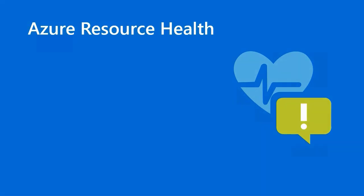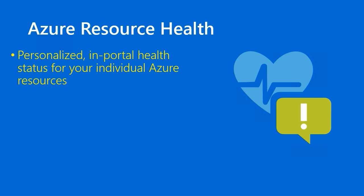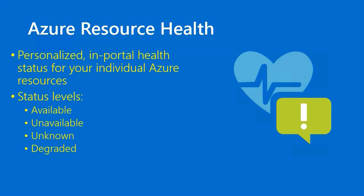Related to Azure Service Health is Azure Resource Health. Service Health is more of a global notification of Azure service status, while Resource Health is a microcosm of that — it's personalized in-portal health status for your individual Azure resources. The status levels reported are: available, unavailable, unknown, and degraded. Available means Azure Resource Manager is able to contact your resource. Unavailable means Azure could not reach your resource after a pre-configured amount of time. Unknown means Azure is not sure about the connectivity of your resource. Degraded means your resource is online but its functionality is not 100%.